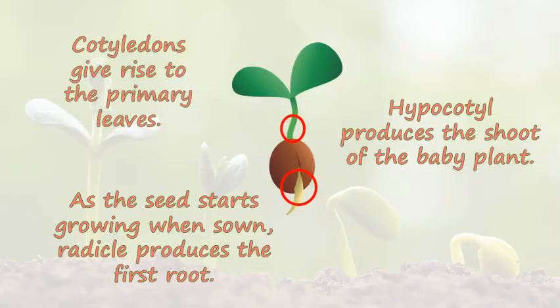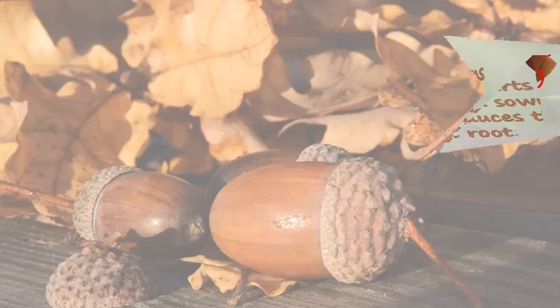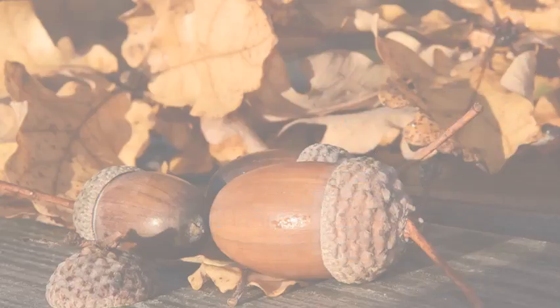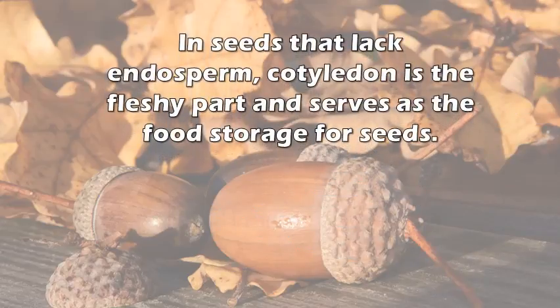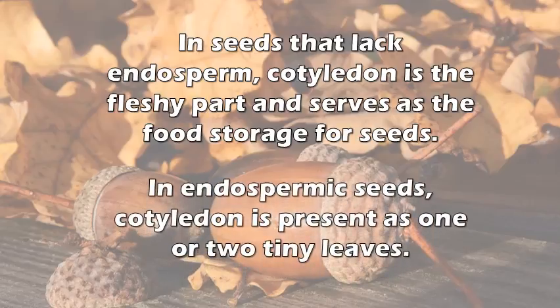Cotyledons give rise to the primary leaves. In seeds that lack endosperm, the cotyledon is the fleshy part and serves as the food storage for the seed. In endospermic seeds, cotyledons have a different role.